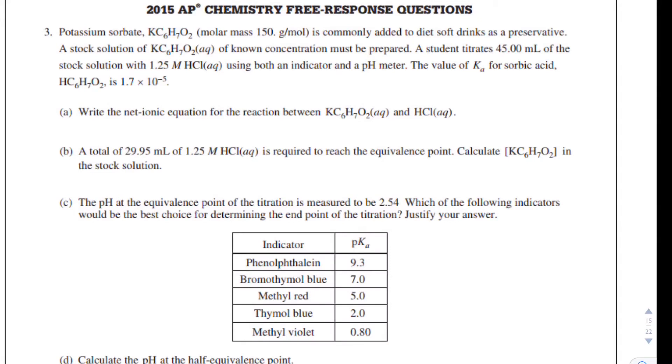In this video, we're going to take a look at number three from the 2015 AP Chemistry test. Here it says we have potassium sorbate, KC6H7O2, with a molar mass of 150 grams per mole, and it's commonly added to diet soft drinks as a preservative.